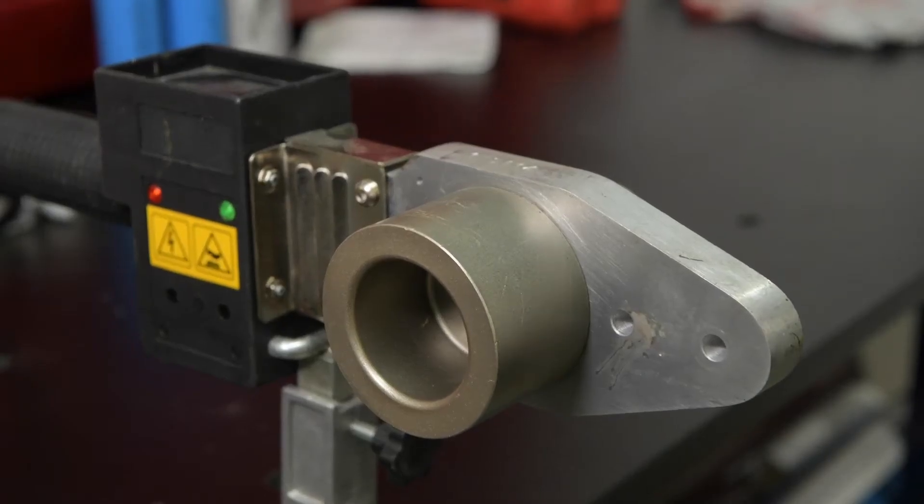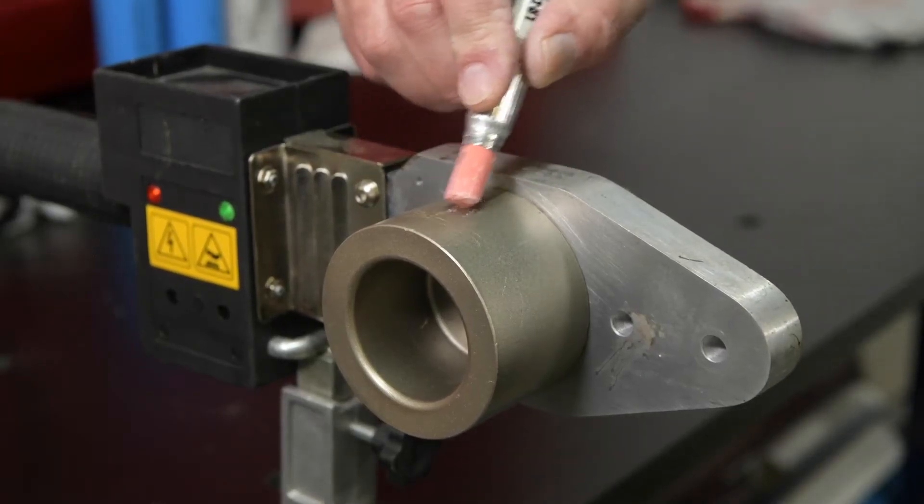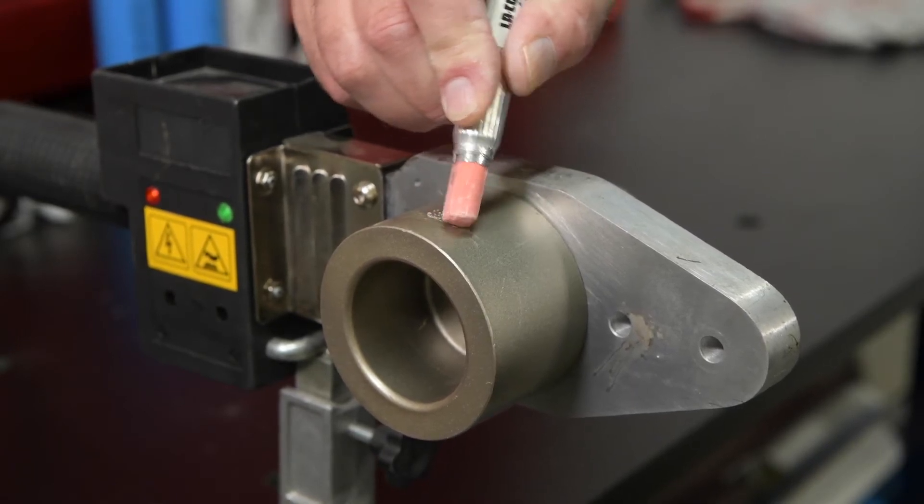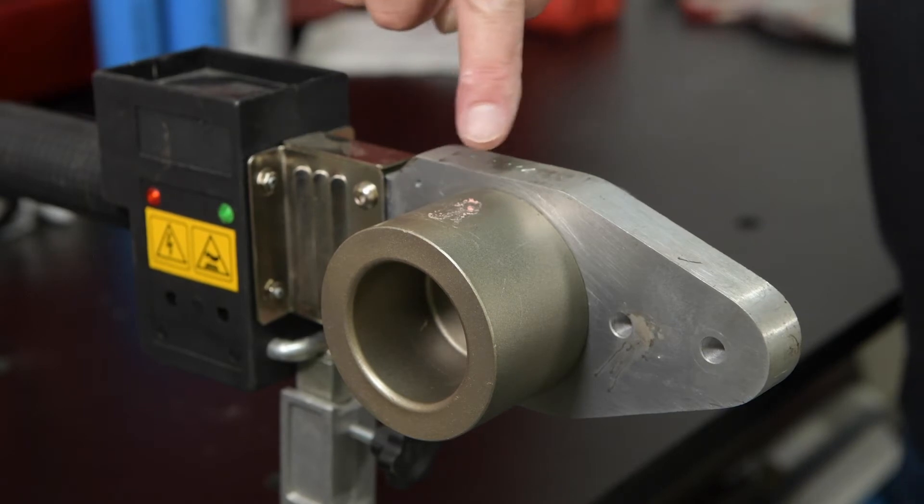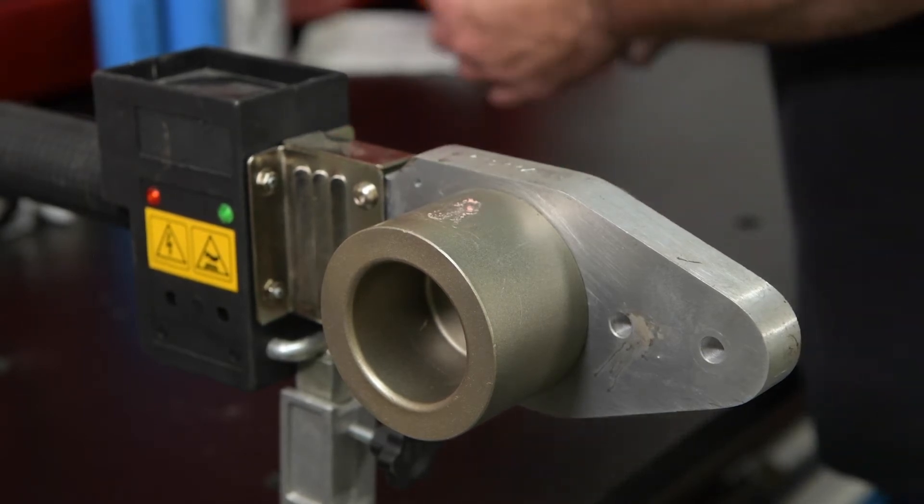Verify the temperature of the socket fusion tool using temple sticks. After plugging in the fusion tool, mark the outside of the female tool head. When the mark discolors and melts, the tool is ready for fusion.